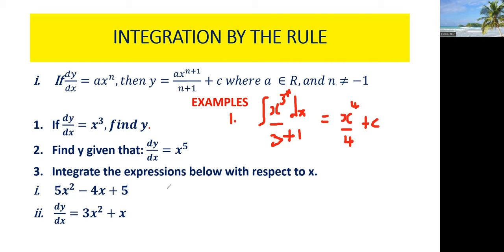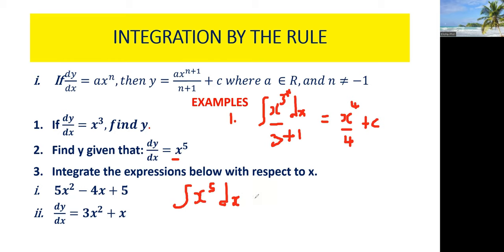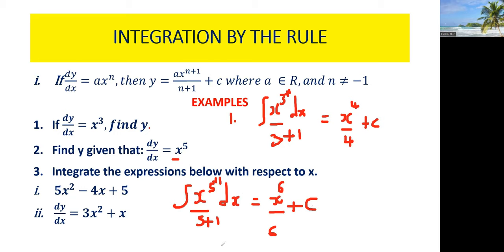Number two: find y, given that the derivative is x raised to the power 5. We simply bring in the integral symbol, write the function we are integrating. You add 1 to the power, and what you do on top is what you do at the bottom. So the final answer will be x raised to the power 6 over 6, plus c, the arbitrary constant.